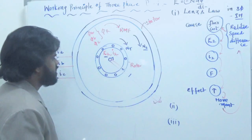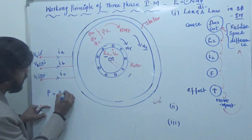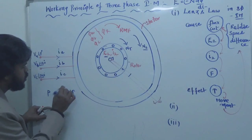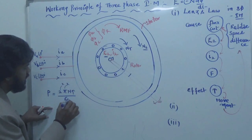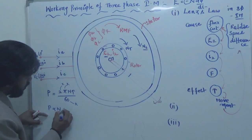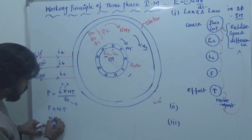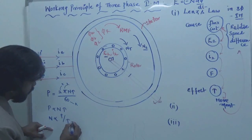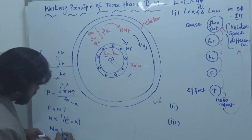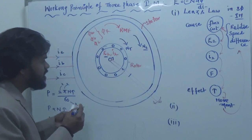Let's come to the discussion. The power equation for any motor is P = 2πNT/60. Here 2, π, and 60 are constants, so power is proportional to speed and torque. This means speed is proportional to power divided by torque. For a constant load application, torque is constant, so speed is proportional to power.